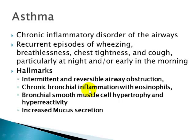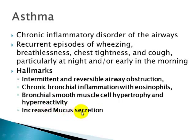Depending upon the type of asthma, the inflammation can be non-specific with neutrophils, lymphocytes, and macrophages, or it can be eosinophil-predominant if it is allergic asthma. The bronchial smooth muscles undergo hypertrophy, hyperplasia, and hyper-reactivity — this is one of the hallmarks of asthma. Importantly, smooth muscles, unlike skeletal and cardiac muscle, can undergo both hypertrophy and hyperplasia.